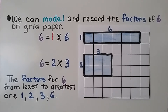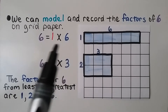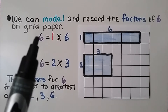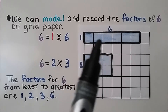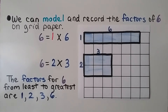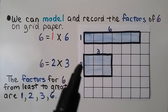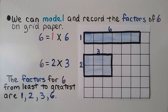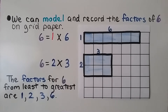We can model and record the factors of 6 on grid paper. We can draw 1 row of 6. Six is a whole number and its factors are itself and 1, so we can do 1 row of 6. Six is also equal to 2 times 3, so we can make 2 rows of 3. The factors of 6 from least to greatest are 1, 2, 3, and 6.